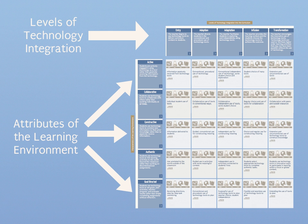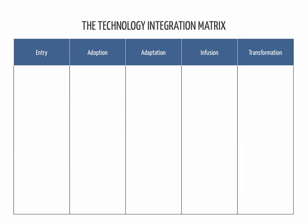Let's talk about those five levels. The levels are entry, adoption, adaptation, infusion, and transformation. The levels were adapted from the ACOT studies and have been described in further detail as a result of observations, interviews, and survey work done in Florida schools. These five levels represent a continuum of technology use.